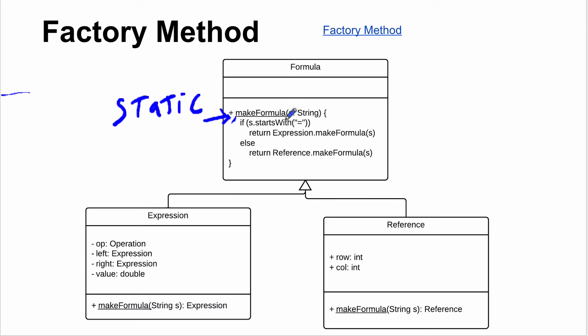The key of the Factory Method is this static method — it allows you to make and return either an Expression or a Reference. The return type is Formula, and it can return subtypes. This works because Expression and Reference are both subtypes of Formula, so returning either one from a method declared to return Formula is valid.